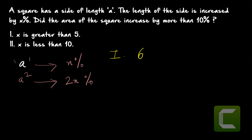From statement one, x is greater than 5. So x can be 6, 7, or more. When x equals 6, area increases by 12%; when x equals 7, area increases by 14%. Whatever the value of x (greater than 5), the area will always increase by more than 10%. So from statement one alone, you can confirm the area of the square is increasing by more than 10%.